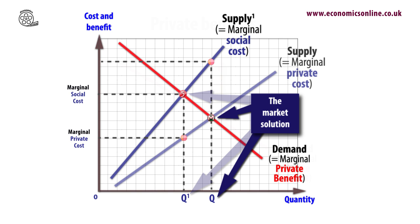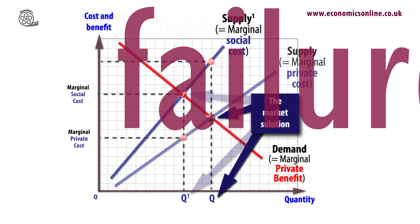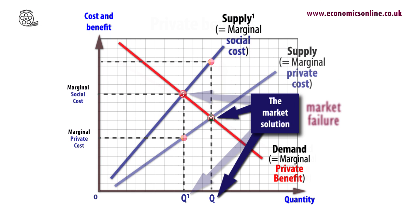Allocating resources based only on private costs and benefits creates a market failure — a market failure with a welfare loss to society, shown as area ABC.